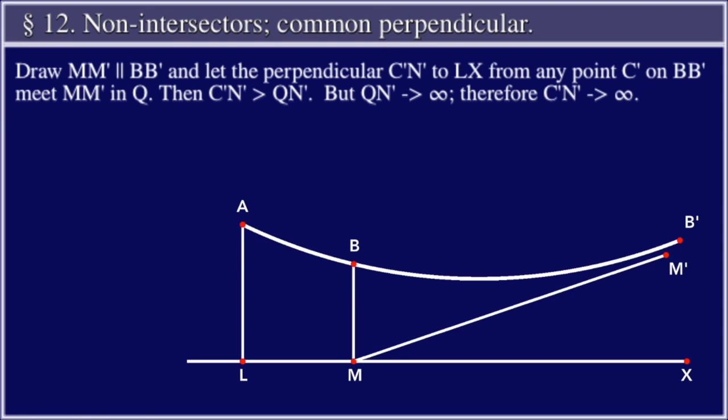Draw MM' parallel to BB', and let the perpendicular C'M' to LX from any point C' on BB' meet MM' in Q. Then C'N' is greater than Q'N', but Q'N' approaches infinity, and therefore C'N' approaches infinity.